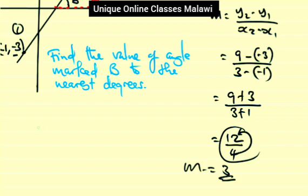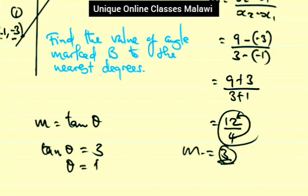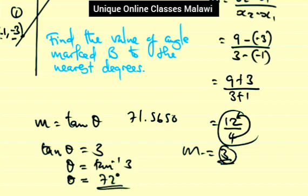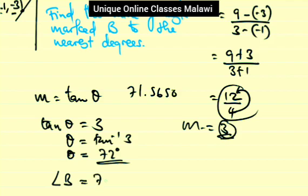The gradient of the line is 3, and since gradient equals tan theta, we have tan theta equals 3. So theta equals tan inverse of 3. Using a calculator, tan inverse of 3 gives 71.56 degrees, so to the nearest degree the value of angle B equals 72 degrees.